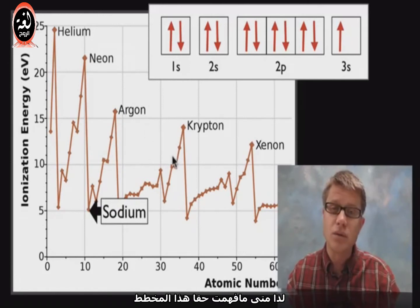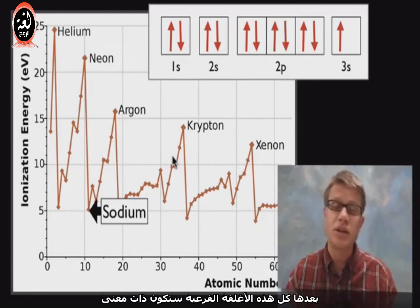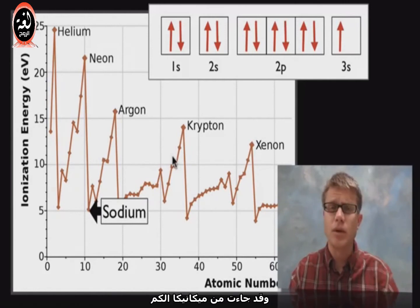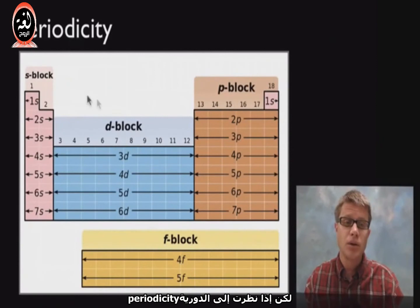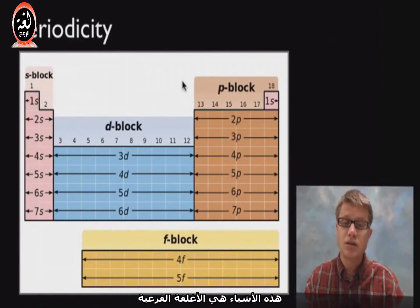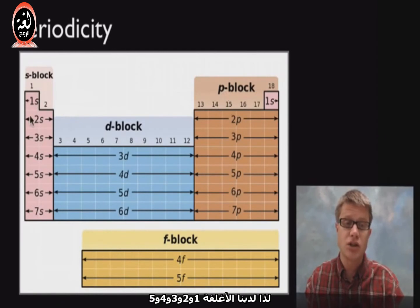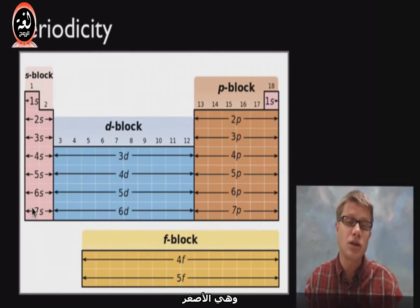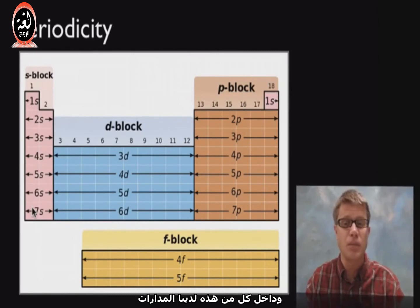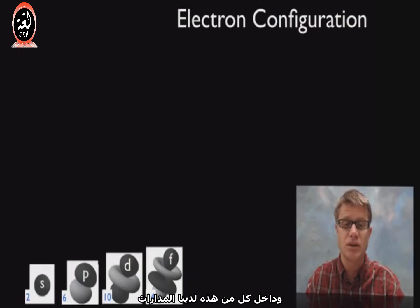Once you really understand what's going on in this chart, all of these subshells make sense. They come from quantum mechanics and quantum numbers. If we're looking at the periodic table — periodicity — these things would be subshells. We're going to have a shell numbered 1, 2, 3, 4, 5, and we're also going to have subshells which are smaller. Within each of those we're going to have orbitals.